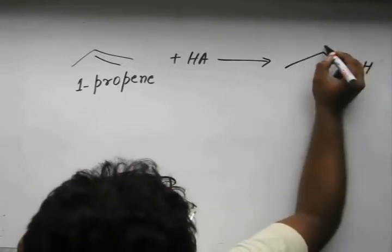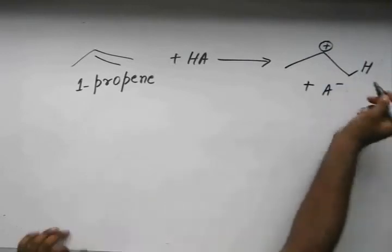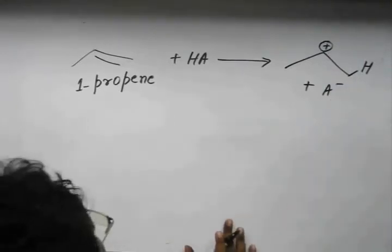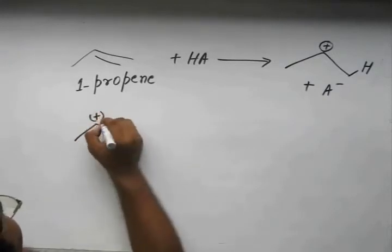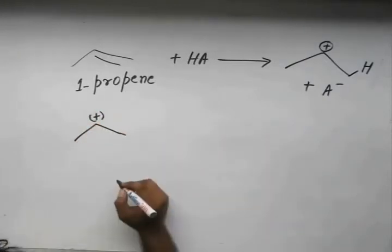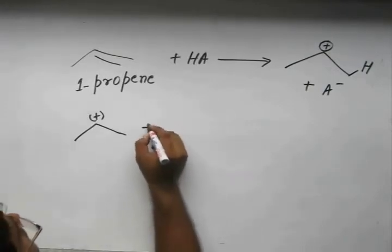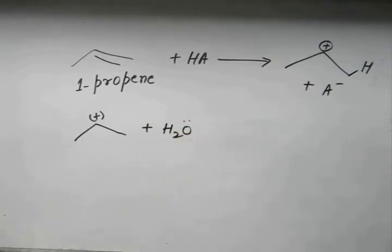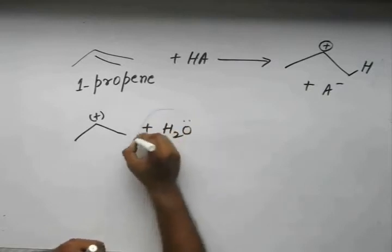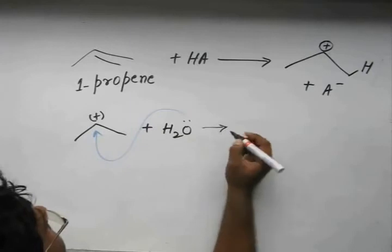We have this acid with us. What happens? H attacks here, we have a carbocation over here and the conjugate base is produced. Now, I am ignoring the H from here. Now this water molecule attacks, this water molecule attacks in here.